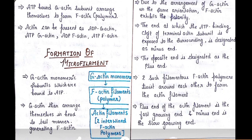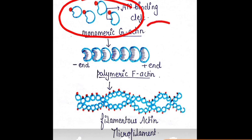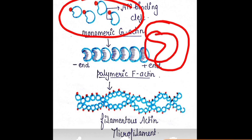Now let's see how formation is happening — similar to what we studied for microtubules. You have some monomeric subunits which we call G-actin. G-actin has a cleft and in this cleft your ATP binds — it is the ATP binding cleft. The side where the ATP binding cleft is present is called the minus end, and the opposite end is called the plus end — similar to your microtubules.